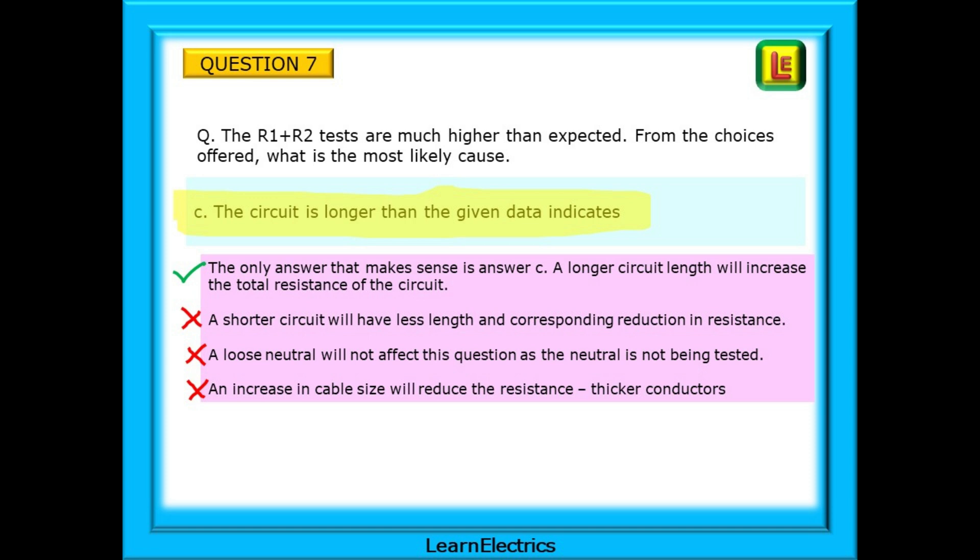A longer circuit length will increase the total resistance of the circuit. If the calculations are made correctly and the test meter readings are correct, then the conductor lengths must be longer than those shown on the drawings. A shorter circuit will have less length and a corresponding reduction in resistance. A loose neutral will not affect this question as the neutral is not being tested and an increase in cable size or CSA will reduce the resistance as these are now thicker conductors.